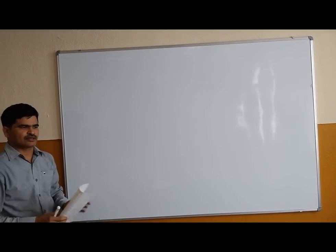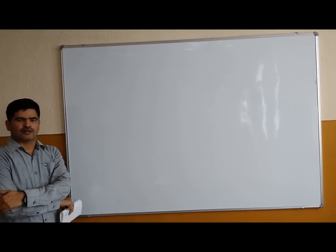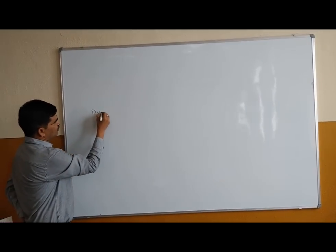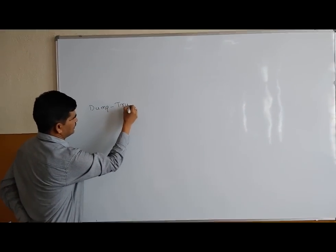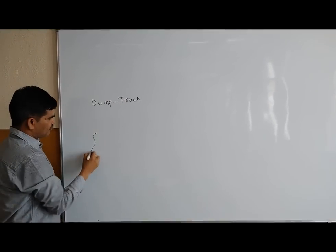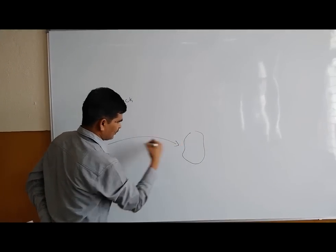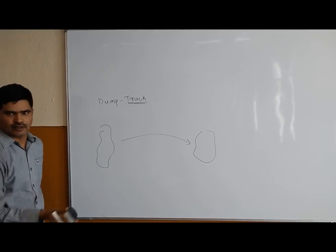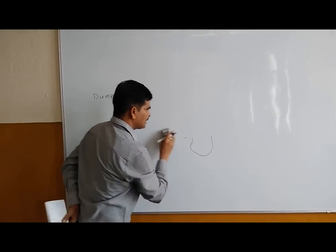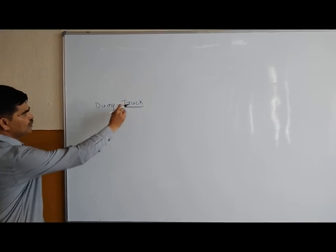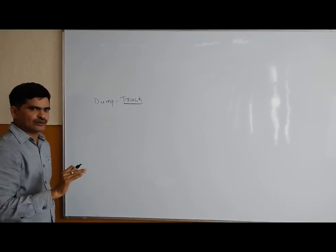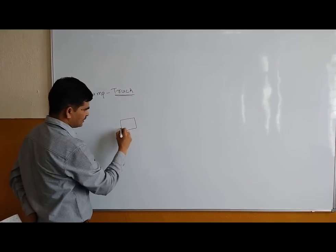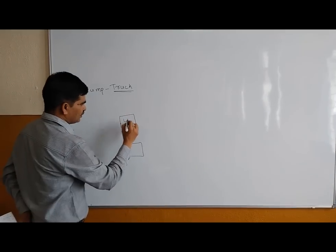Today we are going to discuss how to apply the ES-bar-TA algorithm on a double channel activity system — this is called the dump truck problem. Six trucks — DT1, DT2, DT3, DT4, DT5, and DT6 — are used to shift coal from one place to another. There are two loader machines L1 and L2, and after loading the trucks must be weighed, which is called scaling.